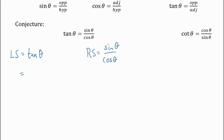We'll get to strategies and things to look for in a moment, but I'll go through this proof first. Usually in a regular year we do this demonstration together and then break into small groups to practice independently. Since we can't do that this year, I'll go through a bunch of proofs looking at the structure, the expectations for showing work, and a reminder of strategies.